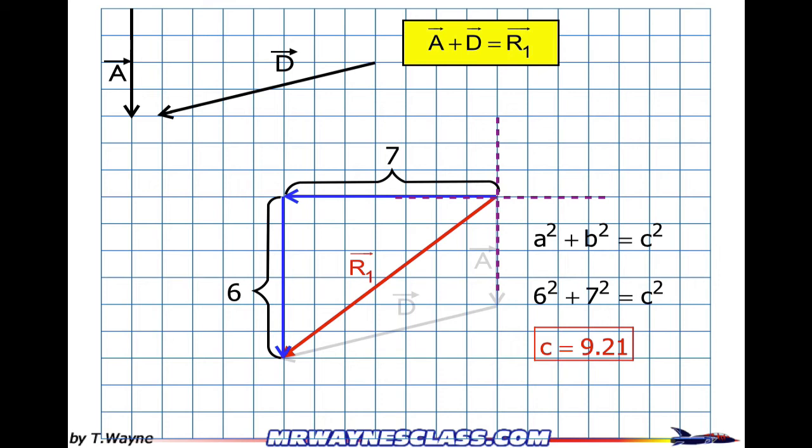So R1 started pointing due east and it rotated backwards like a hand on a clock, but backwards to get to its new position. So that means that's the angle I'm after. I'm going to call it Phi for lack of any kind of creativity. So the angle Phi is what I'm after.